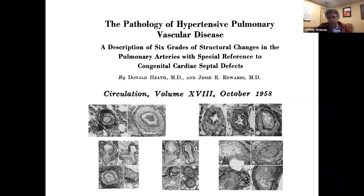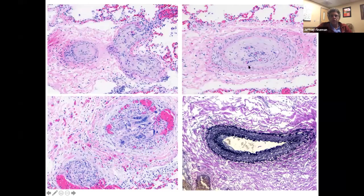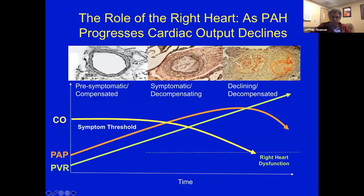In 1958, Heath and Edwards published an anatomic description of these lesions with different grades, known as the Heath-Edwards scale. It's not really clinically useful anymore, but people do still refer to it. Here are pictures of severe disease — a lumen still patent but with medial thickness, and lumens completely occluded with a plexiform lesion. You can see medial hypertrophy and complete occlusion of blood vessels in severe disease.